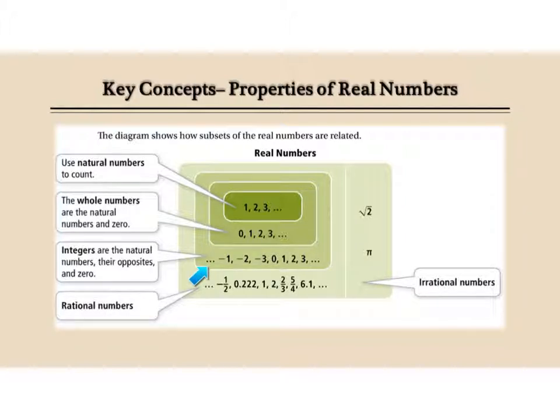If you add negative numbers, they become integers. And then when you add fractions and decimals, they become rational numbers.